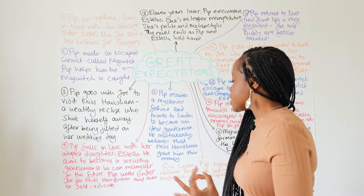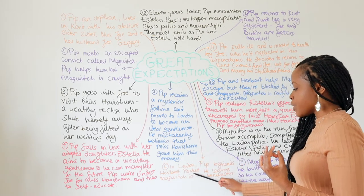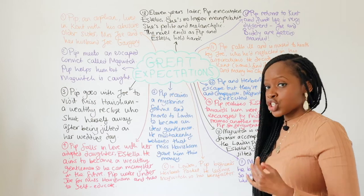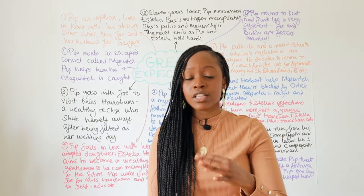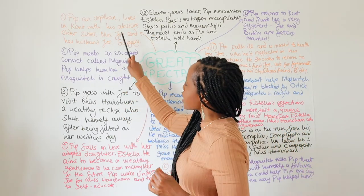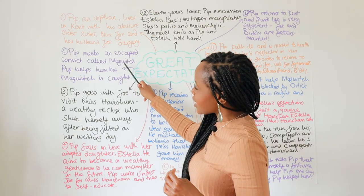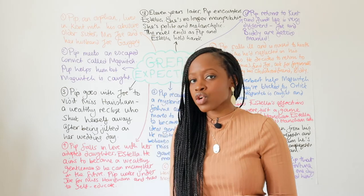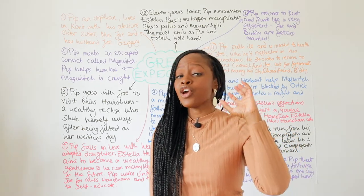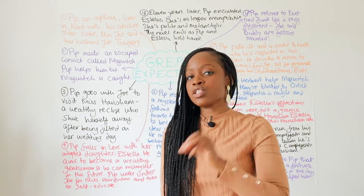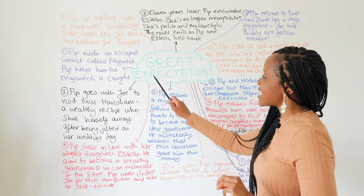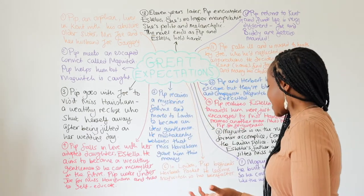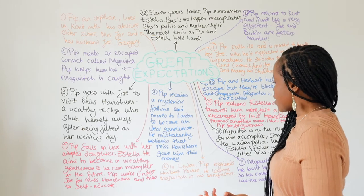When he is in London, Pip befriends Herbert Pocket, and he learns that Magwitch is his benefactor. So the person that Pip met when he was young and was terrified into helping — Magwitch — now reappears. Pip is now a young adult, and he realizes that the person who has given him this huge fortune is not Miss Havisham. Actually, it's this escaped convict, which is a major plot twist. So Magwitch is his benefactor.